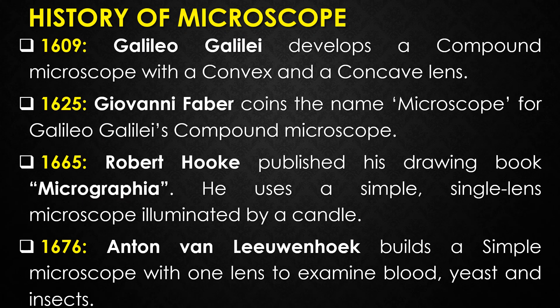In 1609, Galileo Galilei developed a compound microscope with a convex lens and a concave lens. In 1625, Giovanni Faber coined the name 'microscope' for Galileo's compound microscope. In 1665, the English physicist Robert Hooke published his drawing book entitled Micrographia, which was filled with drawings of hairs on a needle and the honeycomb structure of cork. He used a simple single-lens microscope illuminated by a candle.